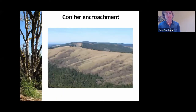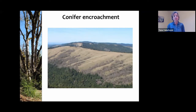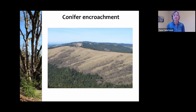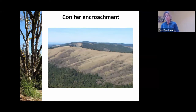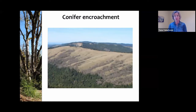Conifer encroachment is the process where the natural element of fire has been removed from the system, allowing young conifers to get established in oak woodland stands that are not culled by the periodic fire regime that would naturally be part of these landscapes. These oak woodlands basically thrived and survived in an environment where fire was frequent, but now after about 150 years of fire suppression, things are changing. As you can see in this image from the Bald Hills in northern Humboldt, there are tight transitions between the oak woodlands and the conifer soils, and the conifers are creeping into the oak woodland soils.